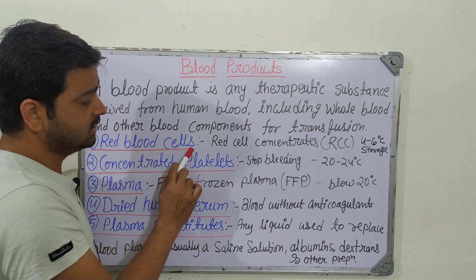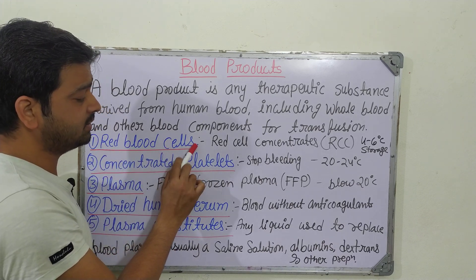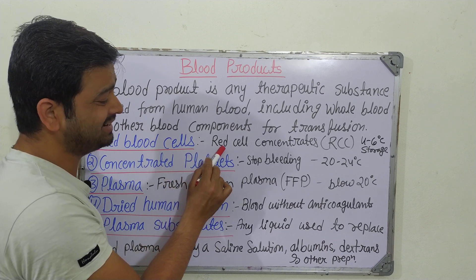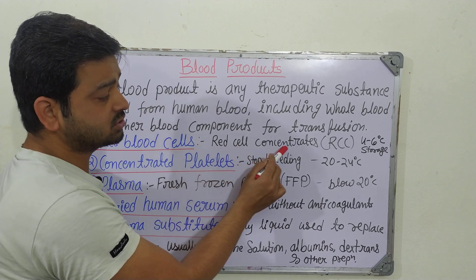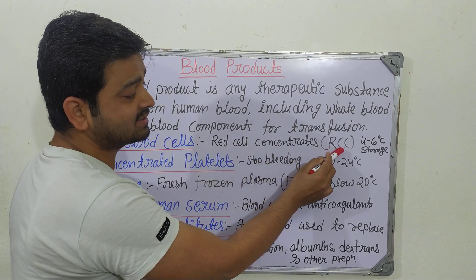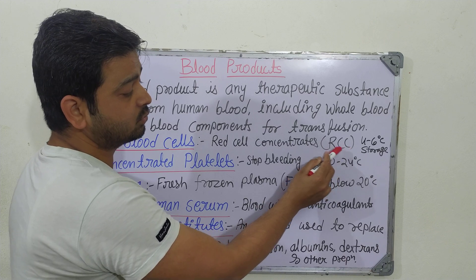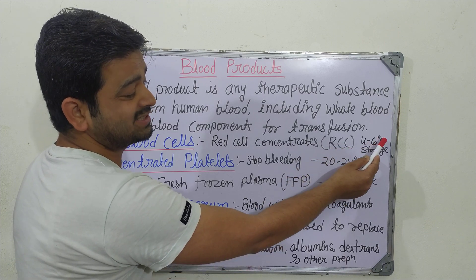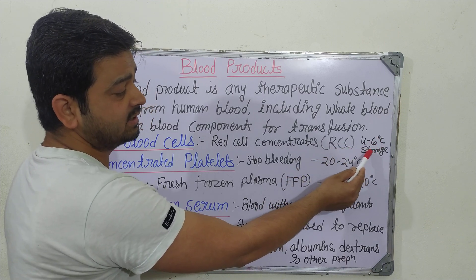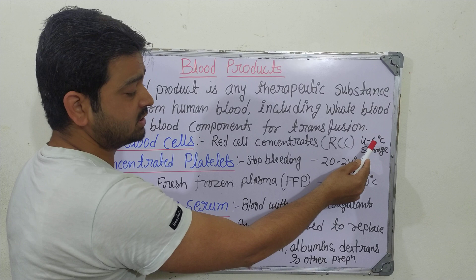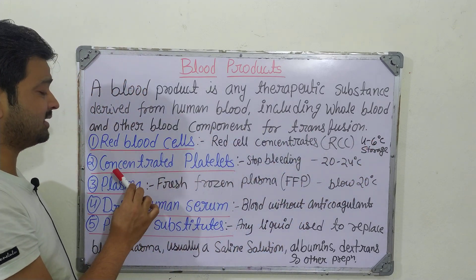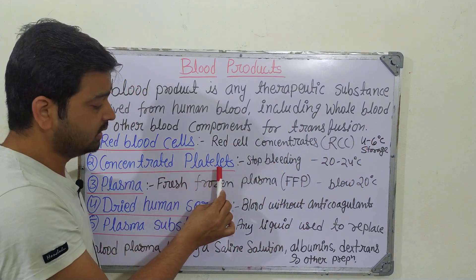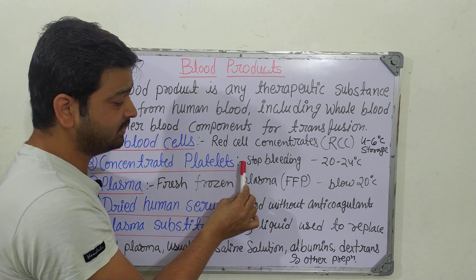There are certain types of blood products. Number one is red blood cells — the products prepared from red blood cells are called Red Cell Concentrates, also known as RCC. These kinds of products should be stored at 4 to 6 degrees centigrade — that is the storage requirement.